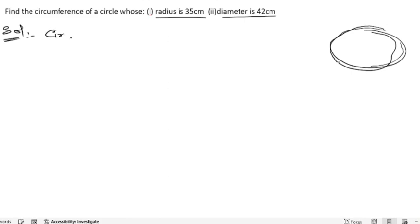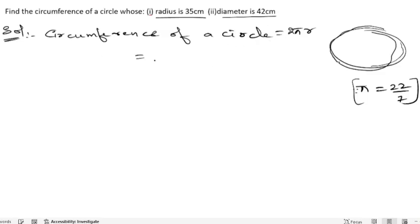What is the formula? Circumference of a circle equals 2πr. And you know the value of pi, that is 22/7 or otherwise 3.14. So here we will take 22/7. 2 into pi, pi is 22/7.